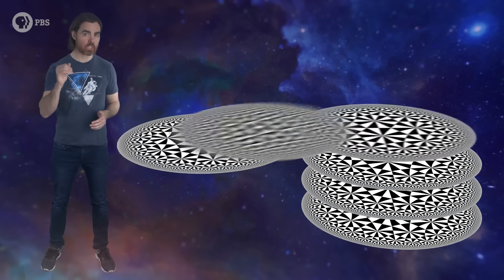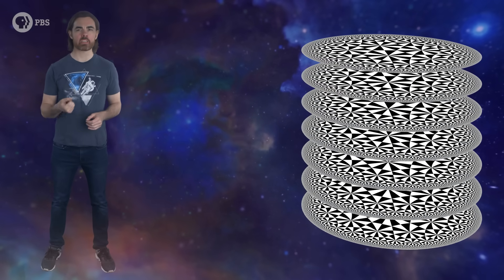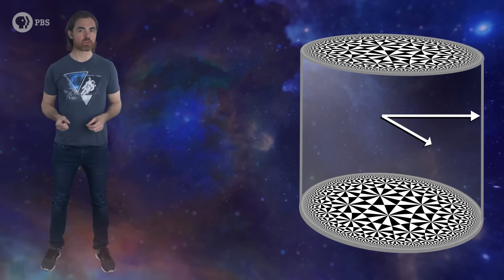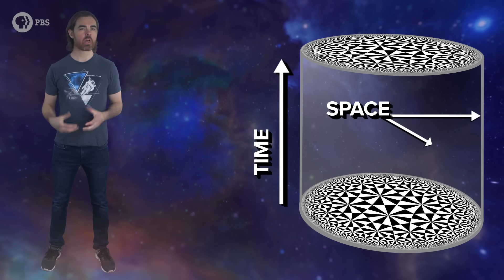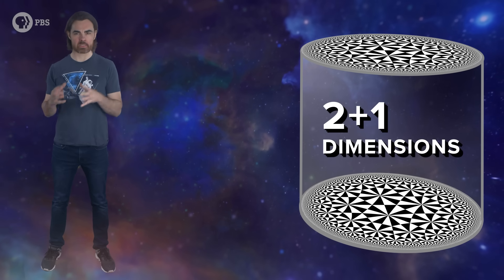In fact, let's add the dimension of time to our hyperbolic projection. Stack a bunch of Poincaré disks, each representing an instant in time. They give you a cylinder representing ADS spacetime with two spatial and one temporal dimensions. Let's call that 2 plus 1 dimensions.